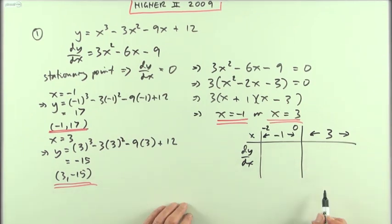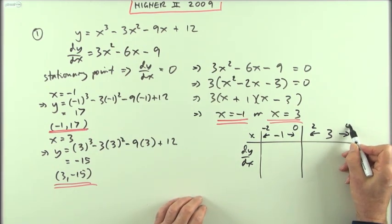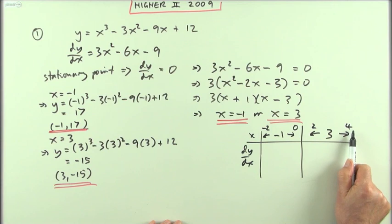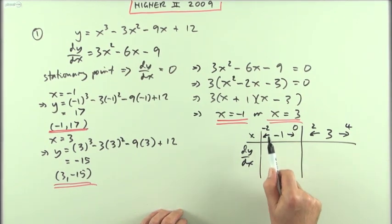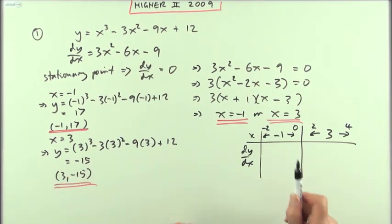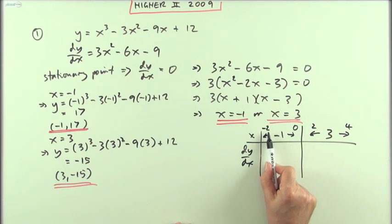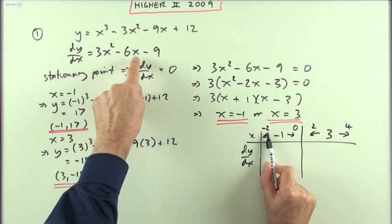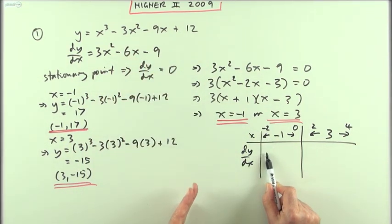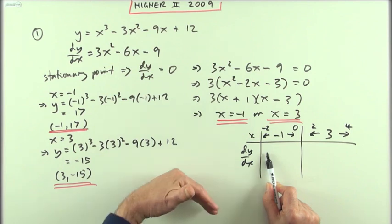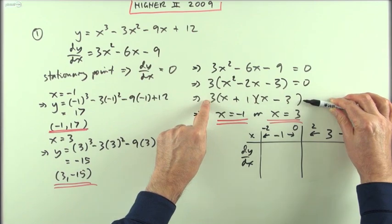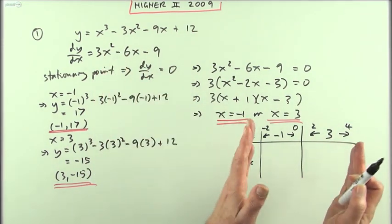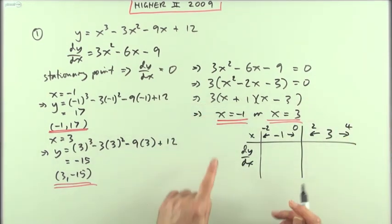Using zero between the two stationary points defeats the purpose of neighborhoods. I'm going to pick something like 2, and after three something like 4. But the whole point is I don't really need to work them all out with full arithmetic — all I'm interested in is whether it's positive or negative. Because I've got this factorized expression, it'll do it for me without heavy calculation.